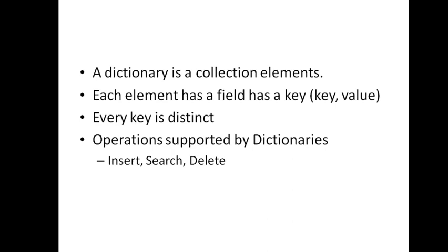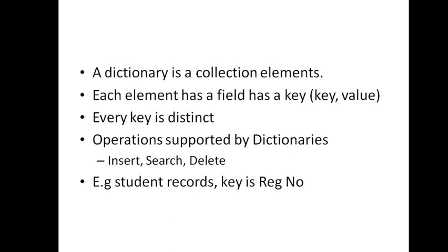For example, to store records for a thousand students, each student has details starting from their register number, name, and other details. If we want to retrieve a particular student record, we need a unique value to locate it — the register number is commonly used as the key. Using the key, we locate the particular student record. This way of managing data is called the dictionary data structure.